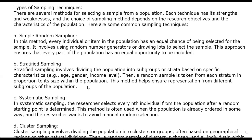The systematic sampling method involves picking every nth individual from the population. For example, every 10th person — like a tithe — is a systematic sampling method. We call it systematic because we give a fixed interval across the population.